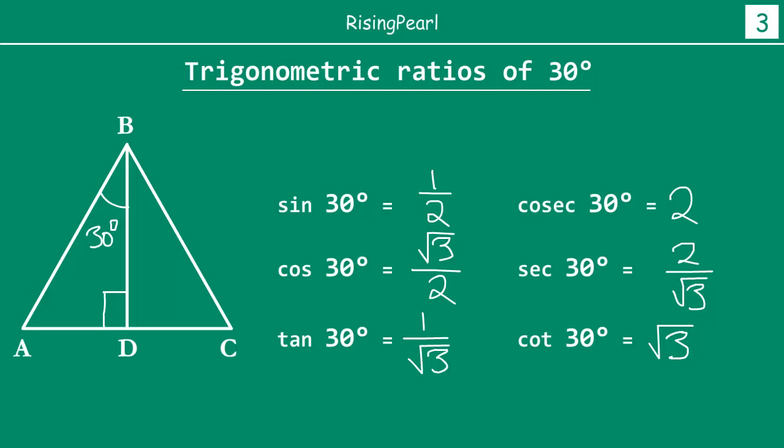So friends, in this webisode we learned all six trigonometric ratios of the 30 degree angle. In the next webisode, we are going to look at the trigonometric ratios for the 0 degree angle.